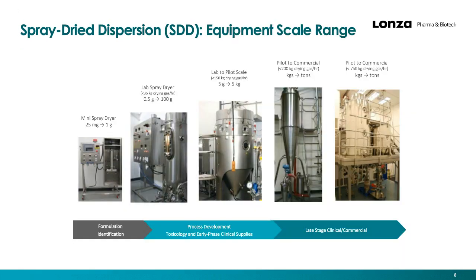Here we show what we can do over a wide scale range for manufacturing spray-dried dispersions. At very small scale, we have a mini spray dryer in Bend that can spray dry batches down to 25 to 100 milligrams of total material. We can scale that up to the lab scale dryer — these two small dryers are normally used at the early phase. As we progress, we scale up to pilot scale and then commercial scale. We offer the three largest dryers both in development and GMP.